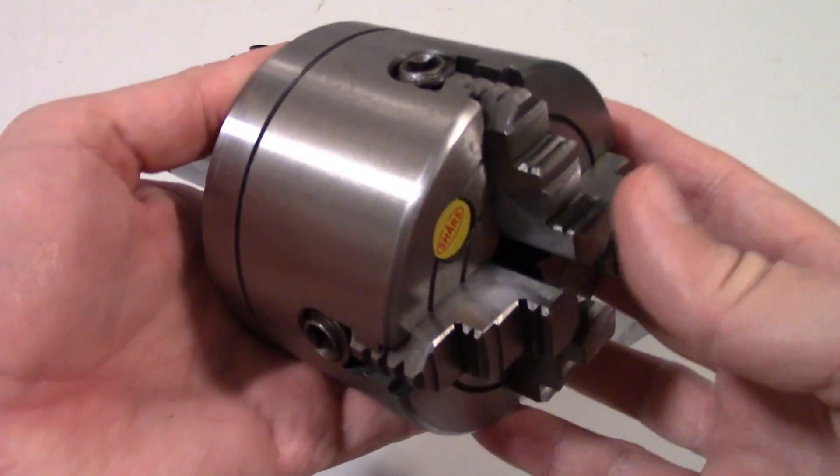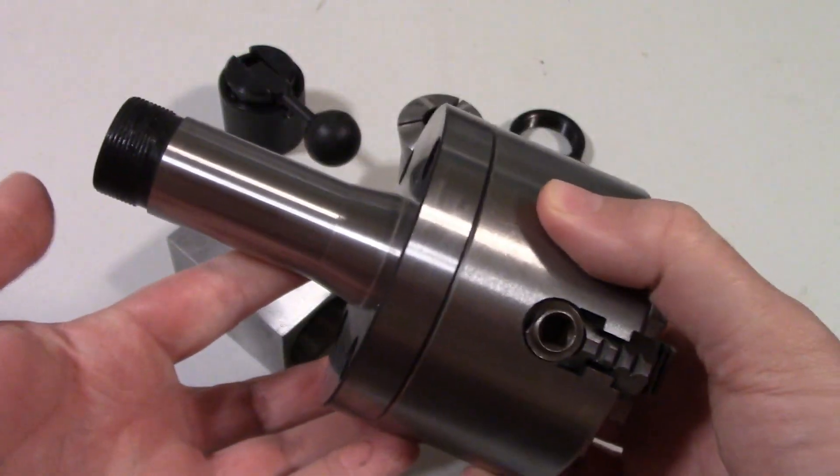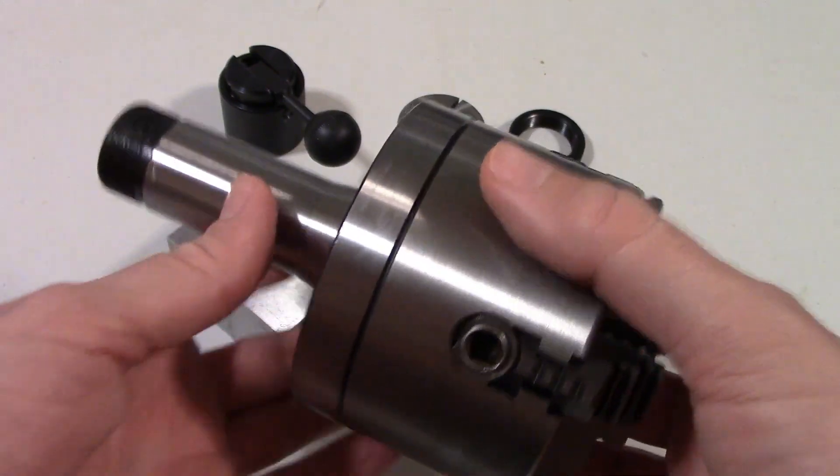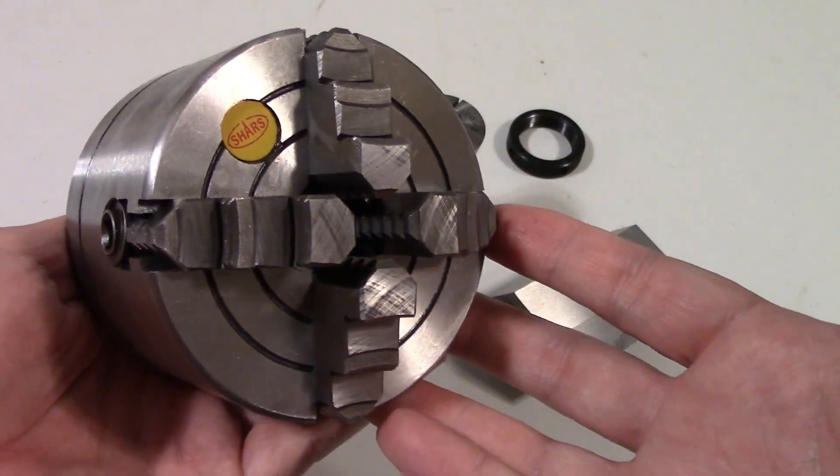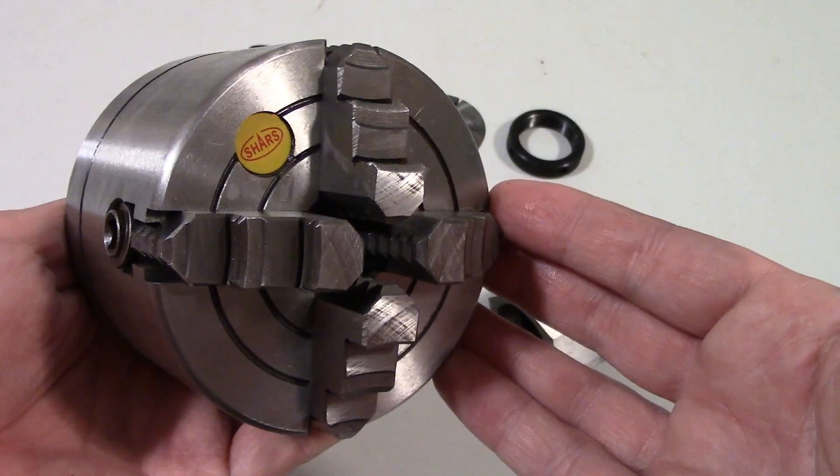There are also small lathe chucks with 5C shanks available for holding larger workpieces. This one happens to be a 4 jaw, but there are 3 jaw chucks available as well.